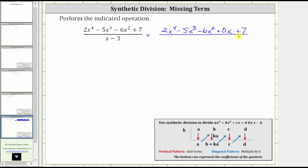Because when performing synthetic division, we are going to use the coefficients of the terms as well as the constant. Which means for synthetic division we'll be using two, negative five, negative six, zero, and seven. We do need this zero to perform synthetic division properly.